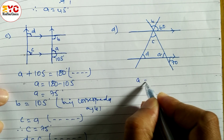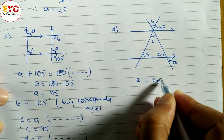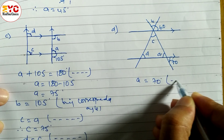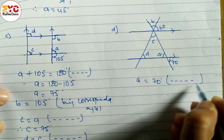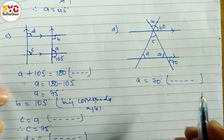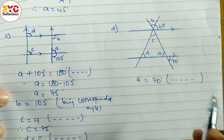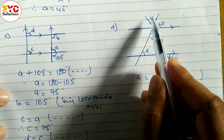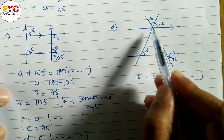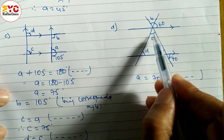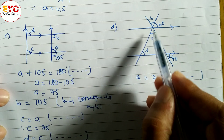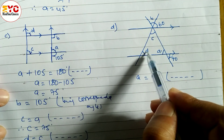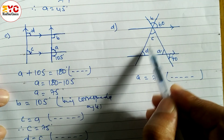So we can write a is equal to 70 degrees. Reason: being vertically opposite angle. After that, c is equal to b, but we don't have any value of these two so we cannot find out yet. d we can find out: d is equal to 60.